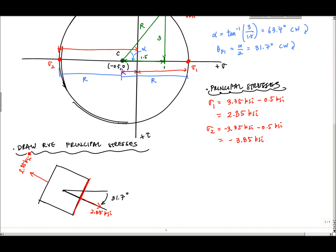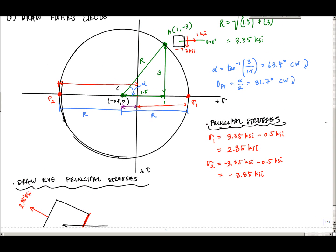To get to the minor principal stress, I could rotate this direction right here. I call this beta, and I know that beta is just 180 minus alpha. Beta is equal to 180 minus 63.4, that's 116.6 degrees.